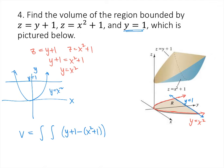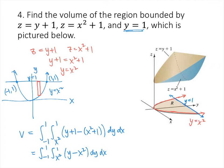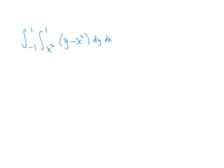I'm going to slice it vertically. The top function is y equals 1 and the bottom function is y equals x squared. My low x value is at the point (−1, 1) and the high x value is at the point (1, 1), so my outer integral goes from −1 to 1 in the dy dx order. Simplifying, I'm integrating from −1 to 1, and from x squared to 1 of just y minus x squared, dy dx. Taking the antiderivative with respect to y: the antiderivative of y is one-half y squared, and the antiderivative of x squared is x squared times y, and I plug in x squared and 1 for y.